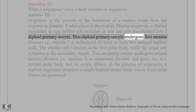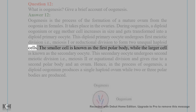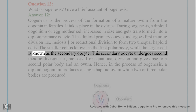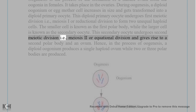This diploid primary oocyte undergoes first meiotic division (meiosis I, reductional division) to form two unequal haploid cells. The smaller cell is known as the first polar body, while the larger cell is known as the secondary oocyte.